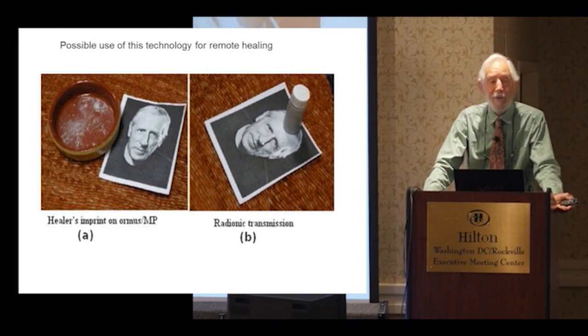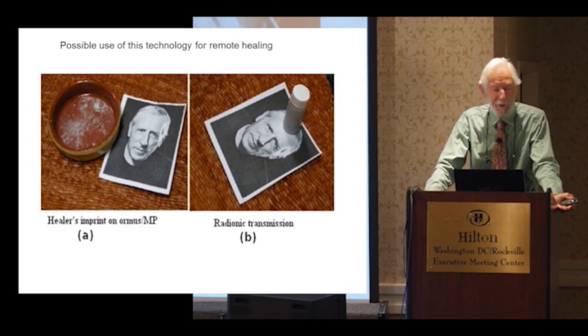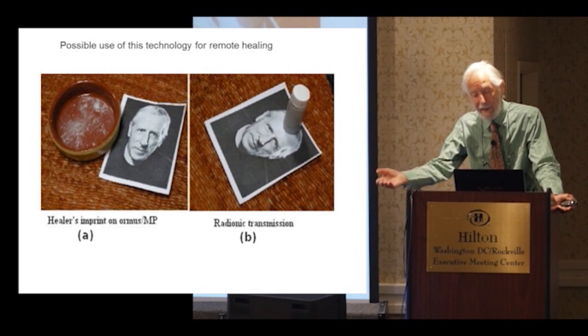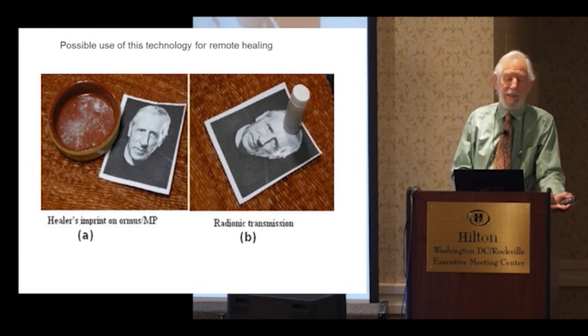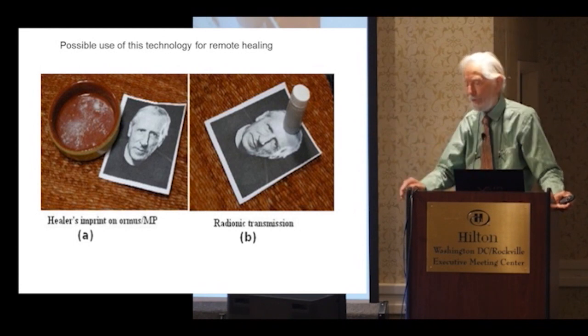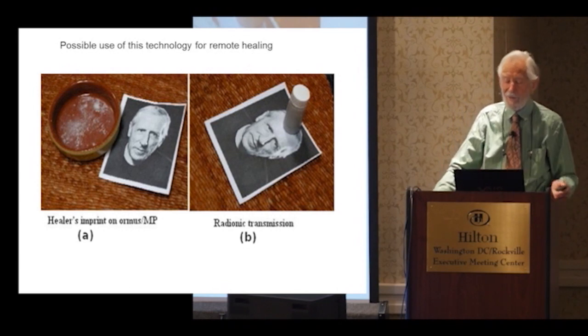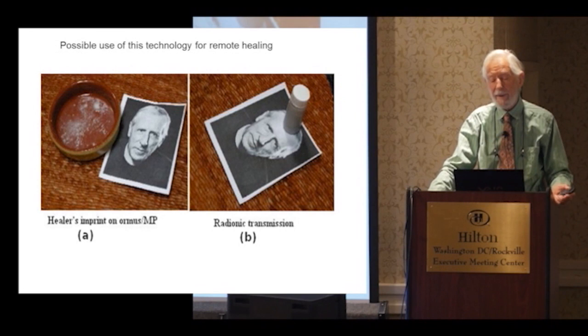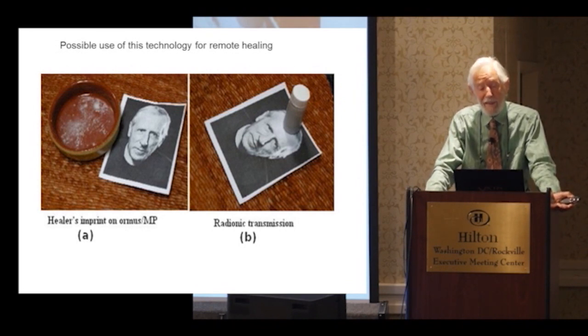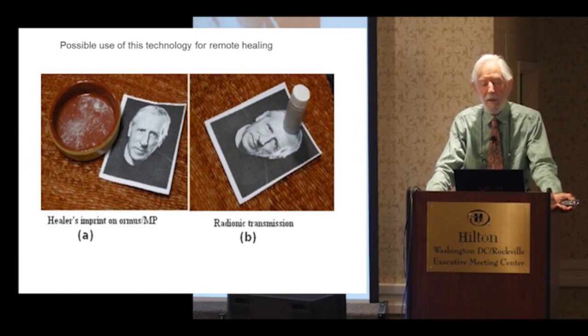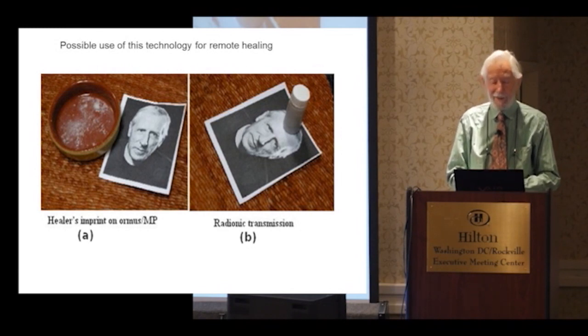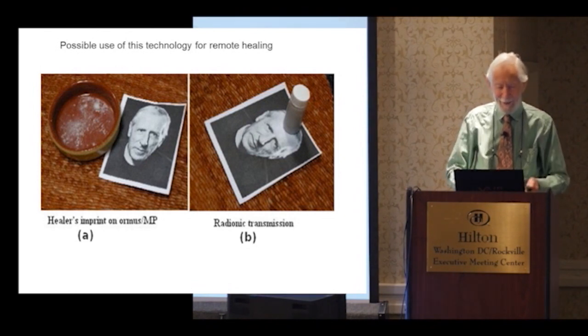This can also, of course, be used in principle for remote healing. So the healer would focus on the healee or a photograph of the healee and add the magnesium phosphate to the dead sea salt solution. Then later you can use this orgonite with the imprinted ORMUS magnesium phosphate inside it in the form of radionic transmission. I've tried this a couple of times, but I can't report very obvious results.